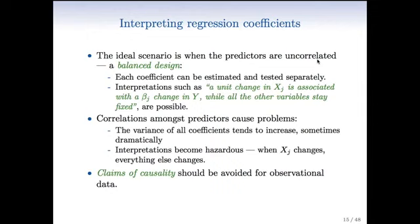Well, if the predictors had no correlation, in other words in the data, then we could talk about each predictor, each coefficient separately. We could make statements like a unit change in xj, for example, is associated with a beta j change, that's its coefficient, in the outcome, with all the other variables fixed.